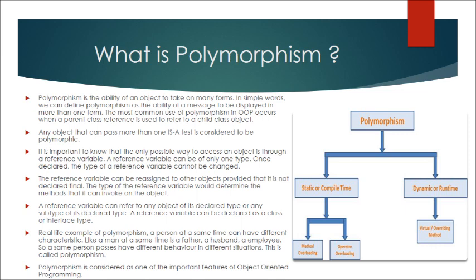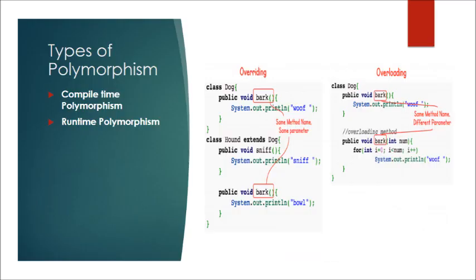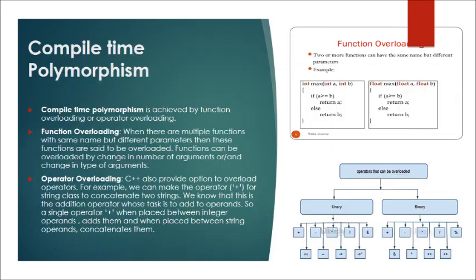Polymorphism is considered as one of the important features of object-oriented programming. Types of polymorphism: Compile-time polymorphism and Runtime polymorphism. Compile-time polymorphism is achieved by function overloading or operator overloading.